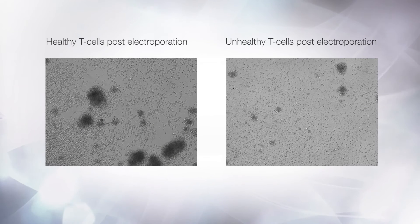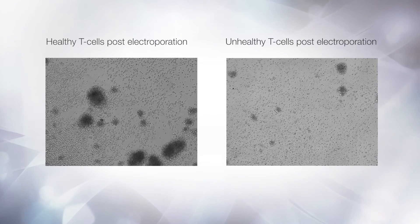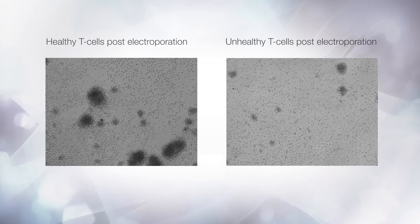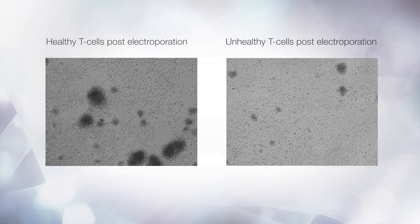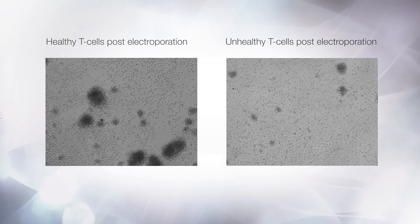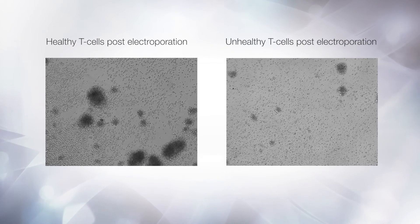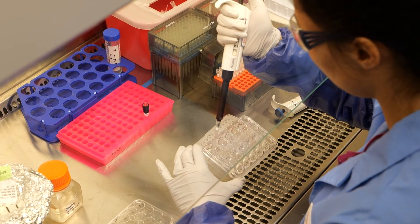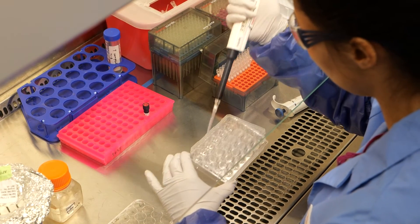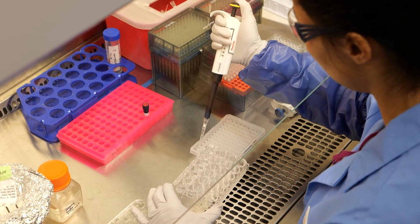At 24 and 72 hours post-transfection, cells should be assessed for toxicity. Key things to look out for include cell stress, death, and contamination. If cells look stressed, refreshing the media can help them to recover.